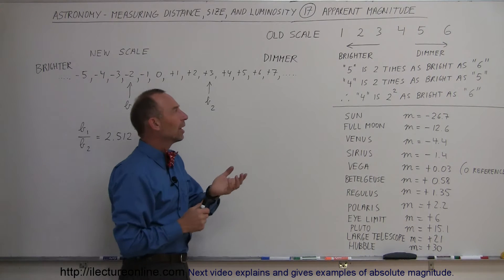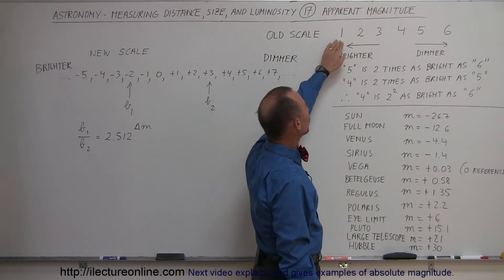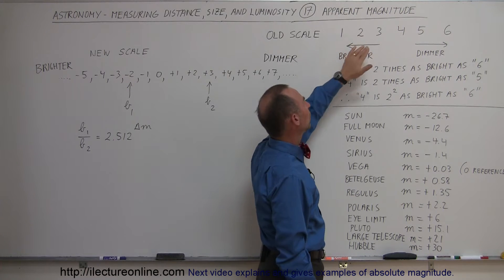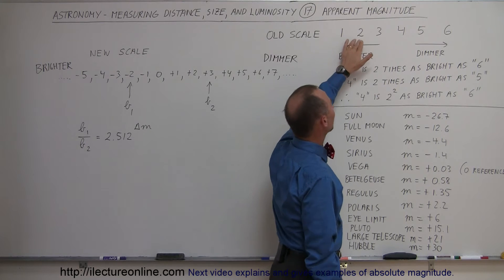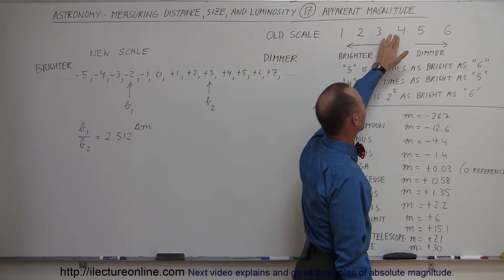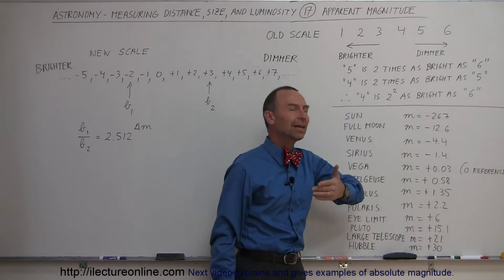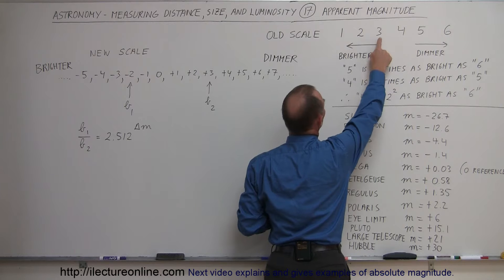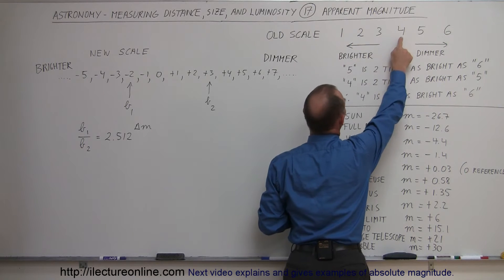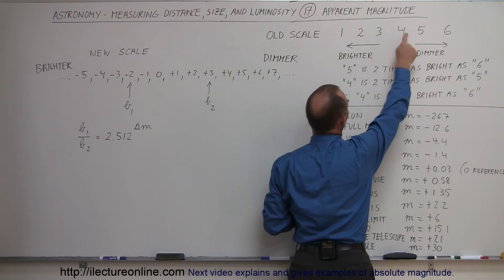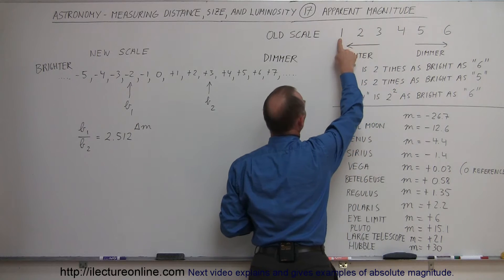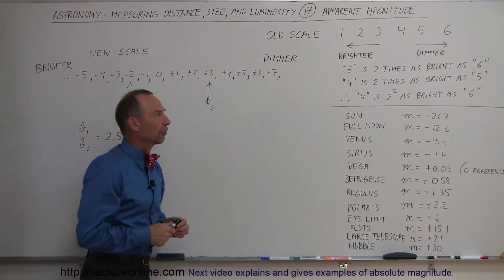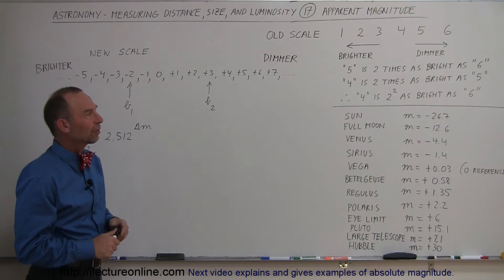Their scheme was that a star that had magnitude one brightness was twice as bright as a star that had magnitude two. Two was twice as bright as three, three was twice as bright as four, and so forth. It was basically a scale by two, and that means that one was four times as bright as three, one was eight times as bright as a four star, one was 16 times as bright as a level five star, and one was 32 times as bright as a magnitude six star.